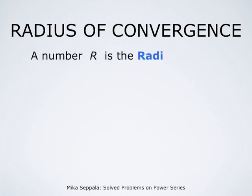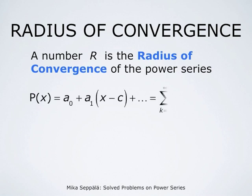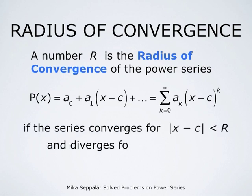A number r is called the radius of convergence of the power series summation k from 0 to infinity of ak times (x minus c) to the power k, if the series converges for |x minus c| less than r and diverges when |x minus c| is greater than r. All power series do have a radius of convergence, which may be 0 or may be infinity. If the radius of convergence is 0, the power series converges only at the point c. If it is infinity, the power series converges for all values of x.